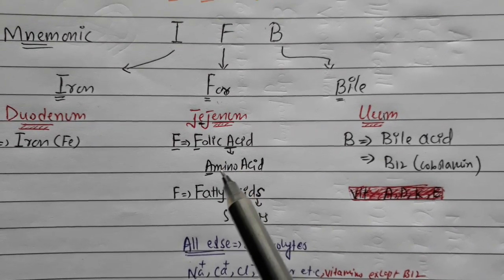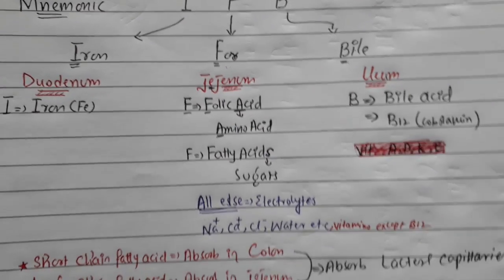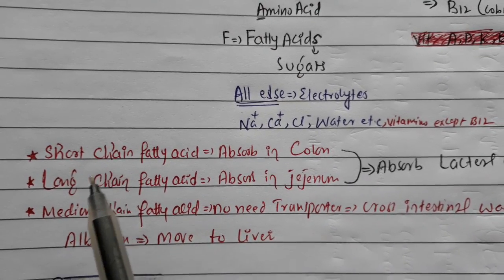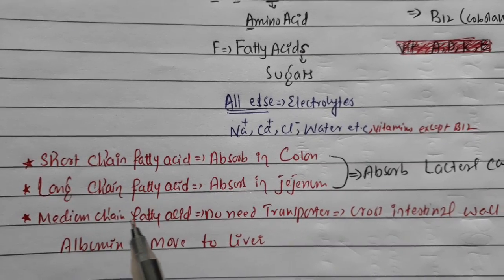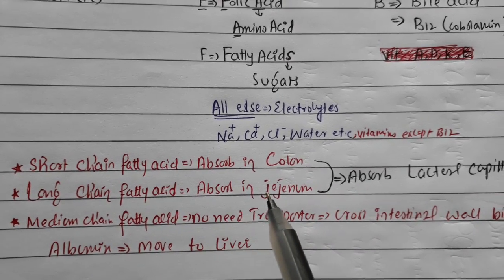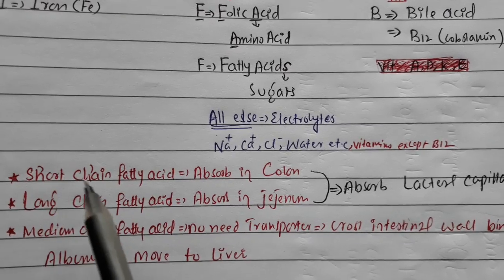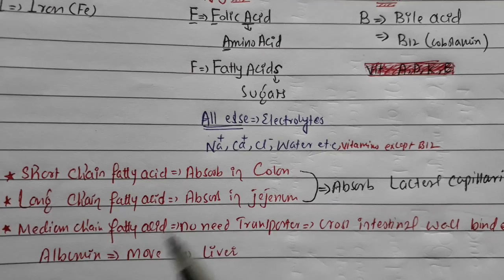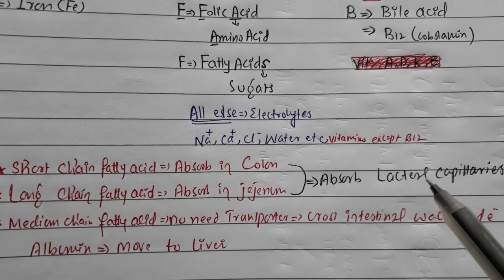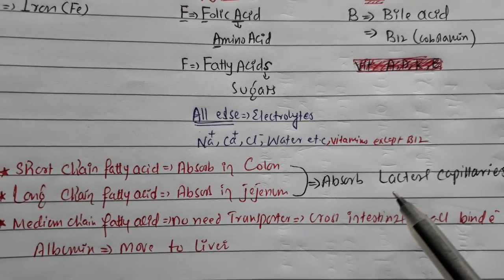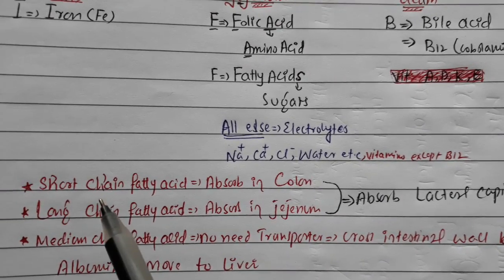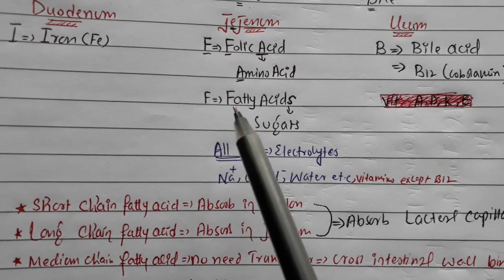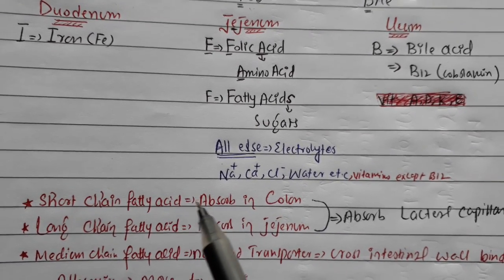Regarding fatty acids: there are short chain, long chain, and medium chain fatty acids. Long chain fatty acid is absorbed in the jejunum. Short chain fatty acid is absorbed in the colon. Medium chain fatty acid is absorbed everywhere — they don't need a transporter. Short and long chain fatty acids require lacteals.